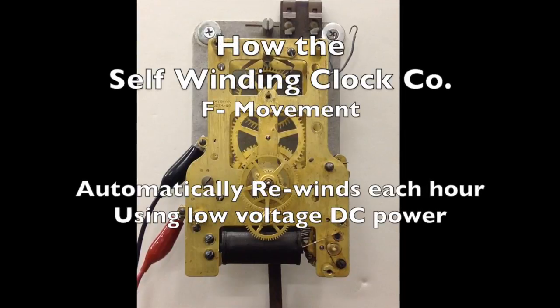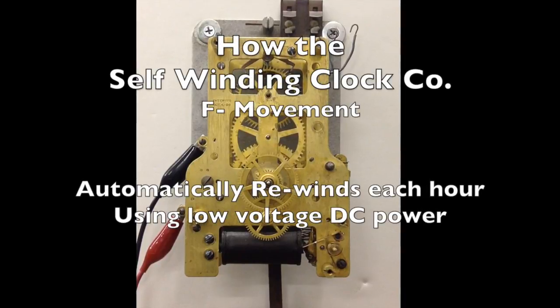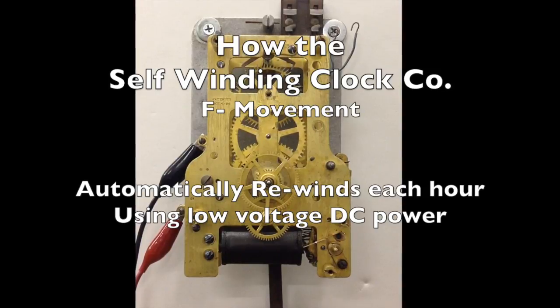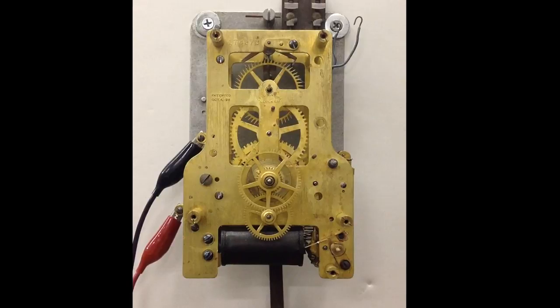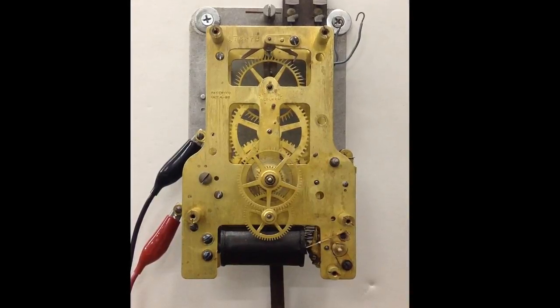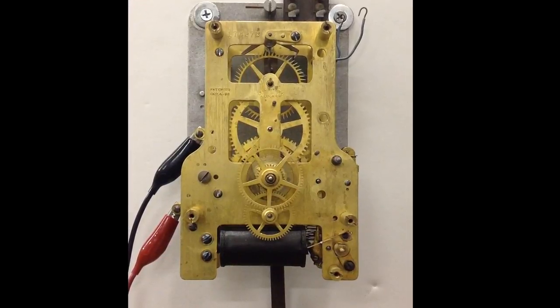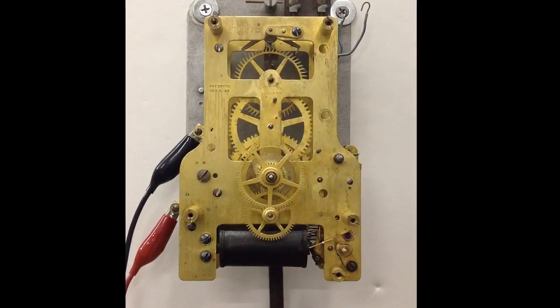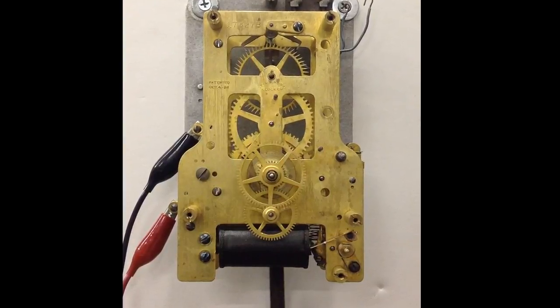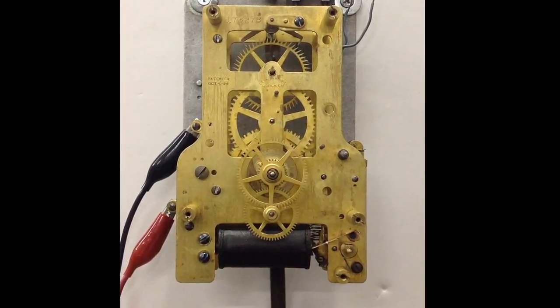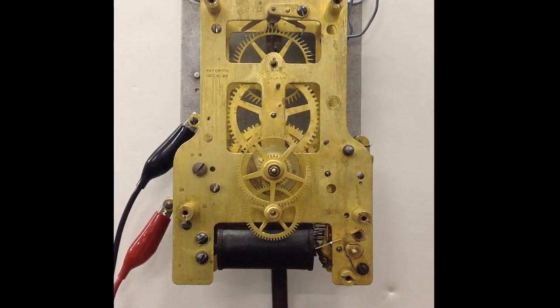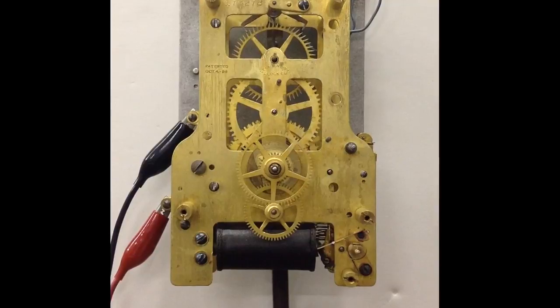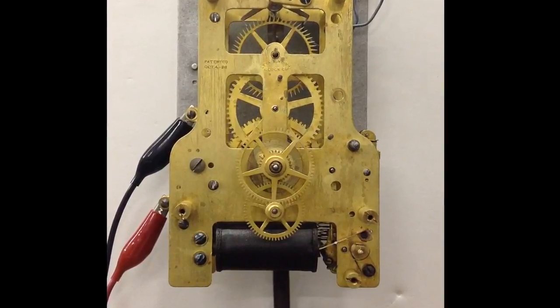This video explains how the Self-Winding Clock Company Style F movements automatically rewind the mainspring every hour. This is a Style F or vibrator movement made by the Self-Winding Clock Company of New York. I have removed the synchronizer attachment and the auxiliary contacts. This will make it easier to see the components operating the hourly rewinding of the mainspring.